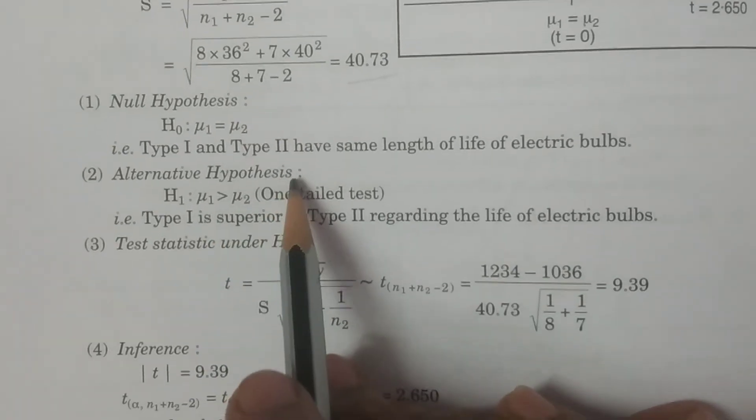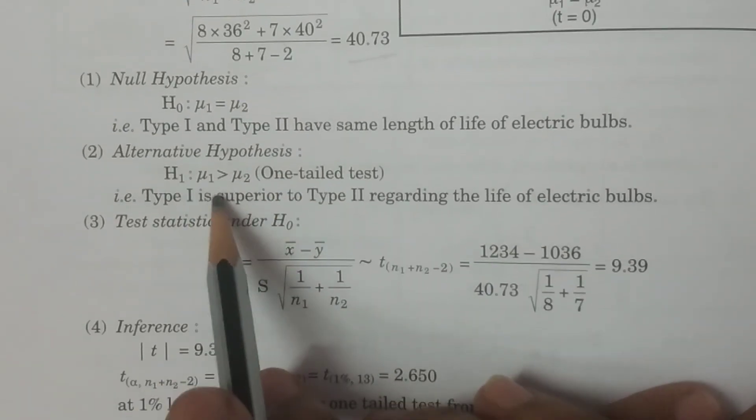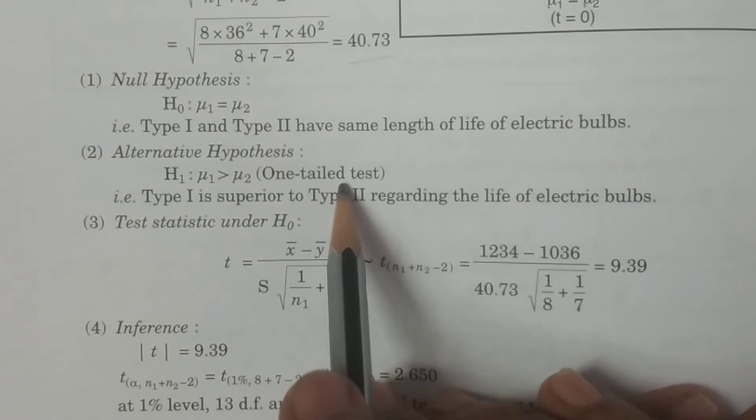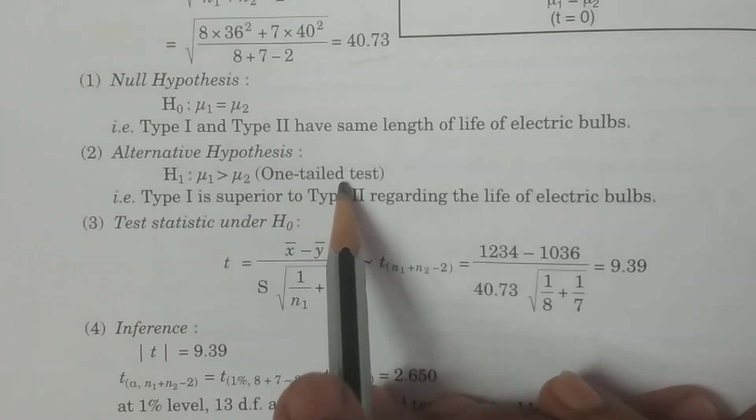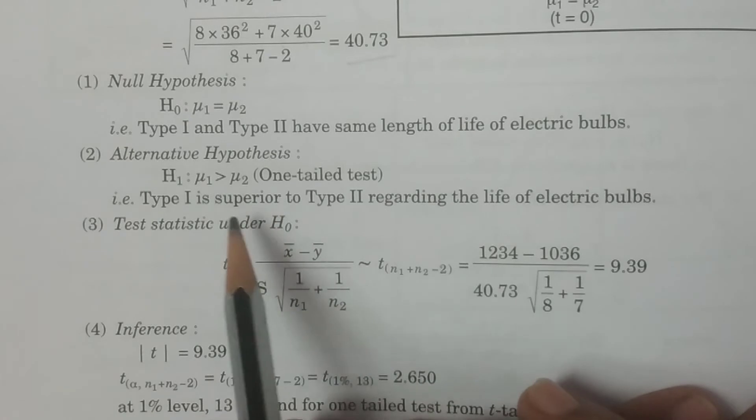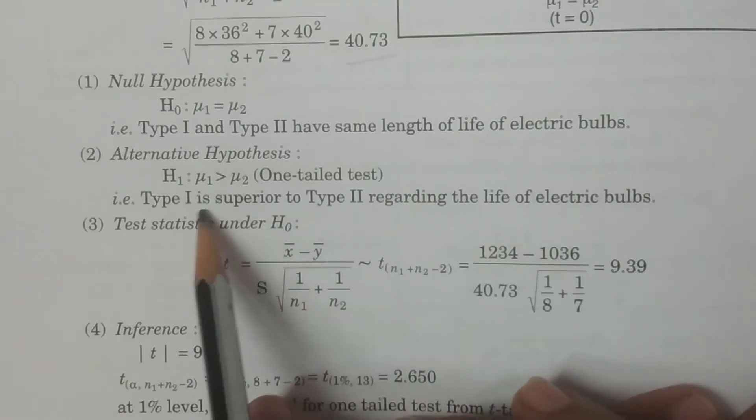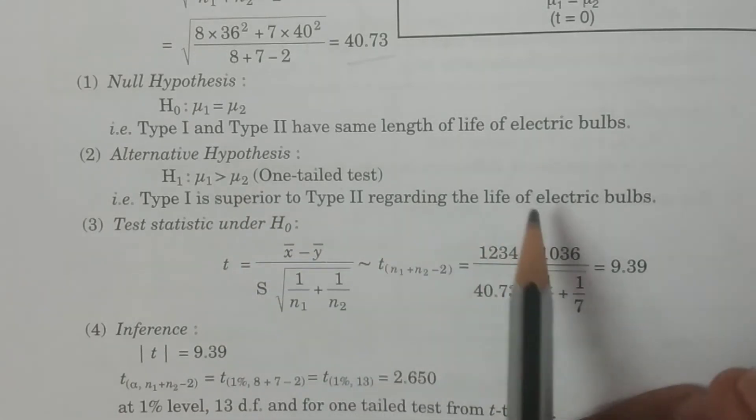And alternative hypothesis, that is μ1, H₁: μ1 greater than μ2, it is a one-tailed test. That is what we are specifying here: the Type 1 is superior to Type 2 regarding the life of the electrical bulbs.